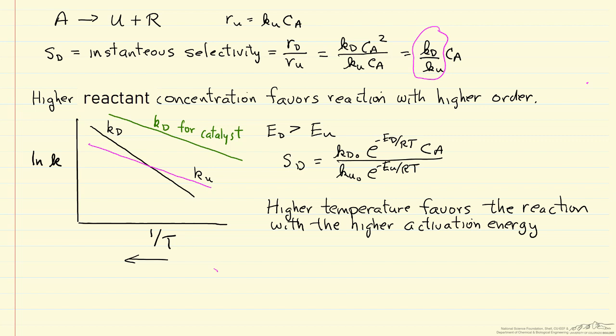Now we've said that the concentration of reactant can affect selectivity, and the question might be, how do we change the concentration of reactant? In some cases, that's by picking the right type of reactor.